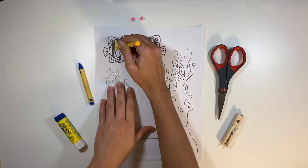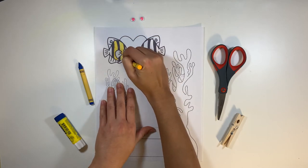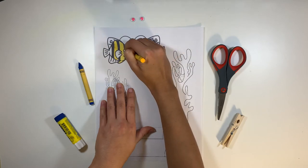First step is to color. You can color them whatever colors you'd like, of course. But I went with blue and yellow.